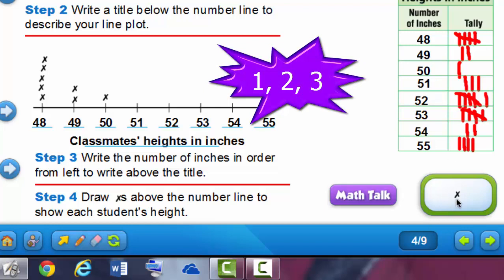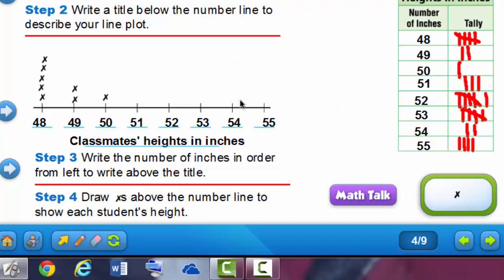Only 1, so we put 1 X above the 50 inches. How many were 51 inches? That's right, 3, so we need 3 X's above the 51. There were 6 students who were 52 inches.